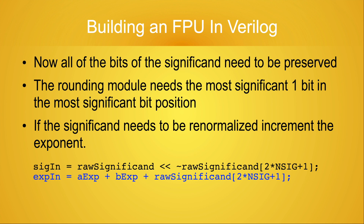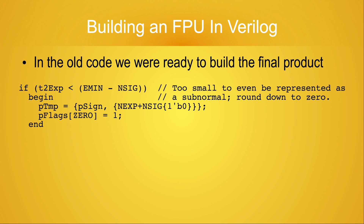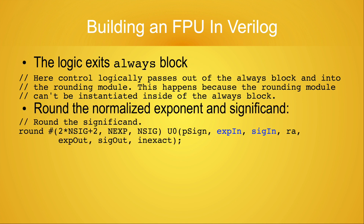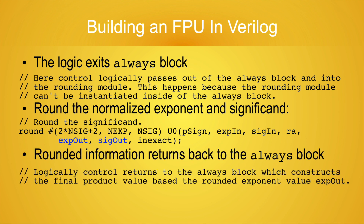Too bad I didn't think of this earlier. In the old code, we now had our final value for the exponent and the significand of the product, and we were able to use these values to construct the final product. Here the new code is less clear. Logically, in the new code, control leaves the always block at this point and passes to the rounding module. The exponent and significand values, as we have computed them thus far, enter the rounding module. The outputs of the rounding module are passed back into the always block and into the conditional logic block used to construct the final product value.